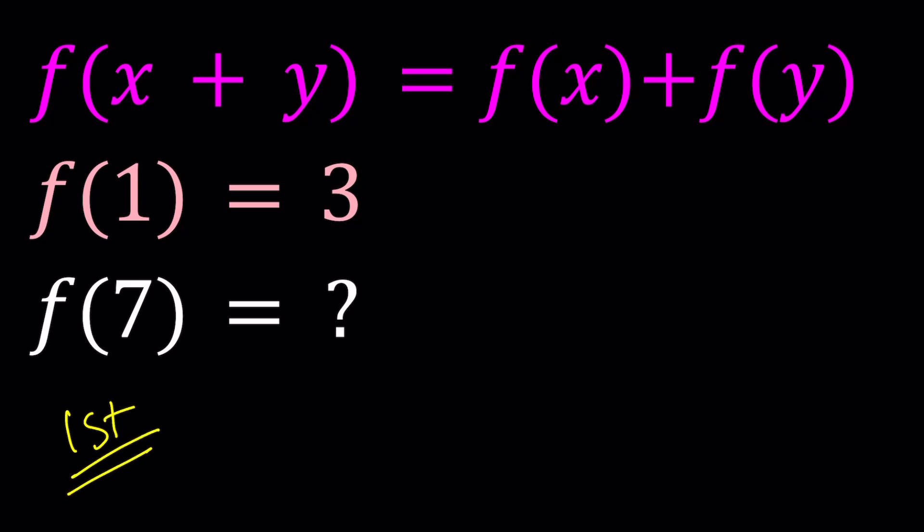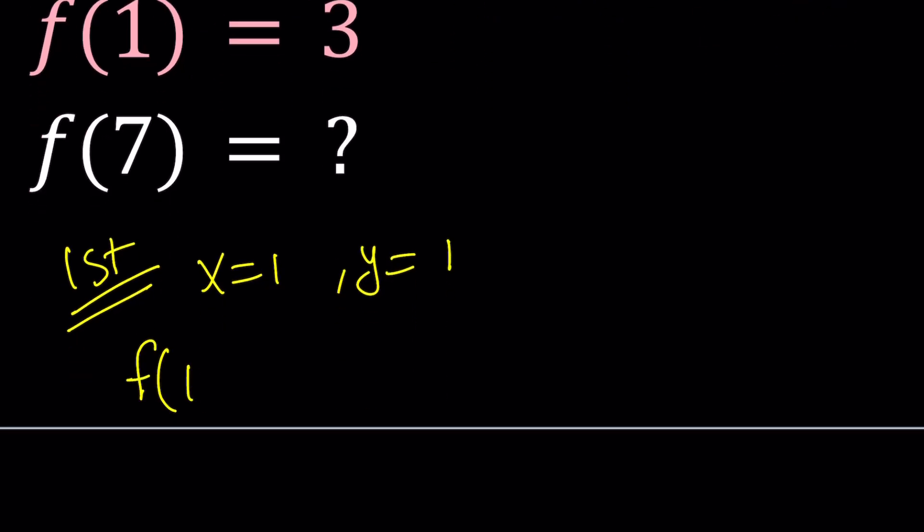For my first method, instead of trying to find what kind of function we have, I'm going to try to get to f of 7. First of all, notice that I have f of 1, and I have the freedom to replace x and y with pretty much anything since this function is continuous at every real number.